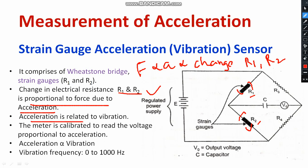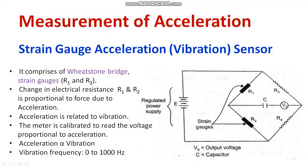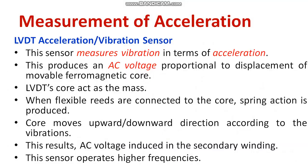R1 and R2 can be measured with the help of the Wheatstone bridge. Acceleration is related to vibration — the meter is calibrated to read the voltage proportional to acceleration. Acceleration is directly proportional to vibration, and vibration frequency is in the range of 0 to 1 kHz. These are the basic details regarding the strain gauge acceleration meter, also known as a vibration sensor.